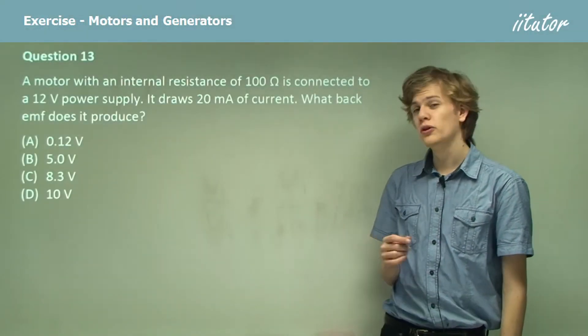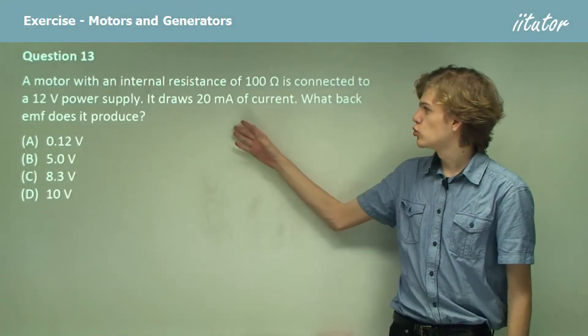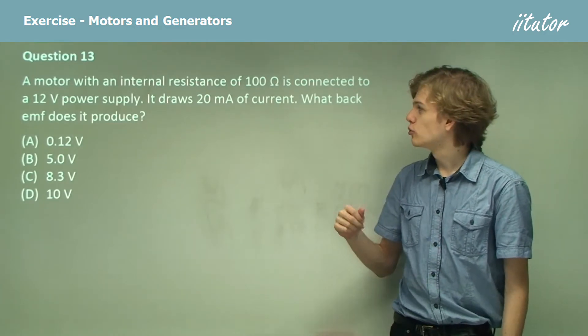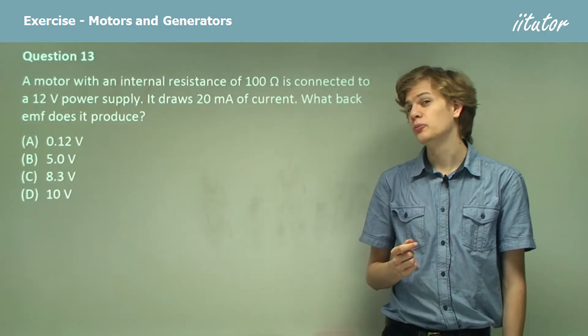A motor with an internal resistance of 100 ohms is connected to a 12 volt power supply. It draws 20 milliamps of current. So what back EMF does it produce?